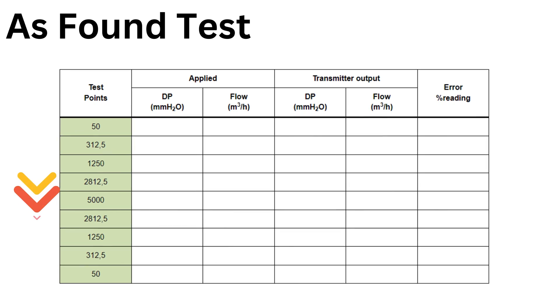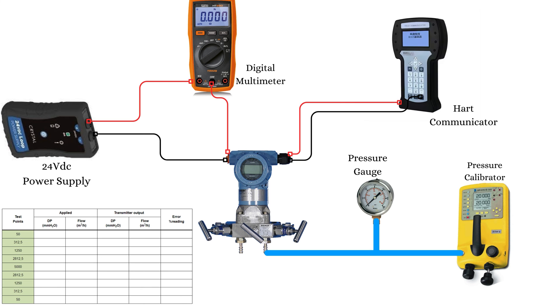Start the validation procedure with zero pressure on the pressure calibrator and increase the pressure until you reach the pressure value of the first test point. Note down the reading from the pressure calibrator in the second column, applied DP, and the reading from the transmitter in the fifth column, transmitter output flow. Similarly, apply the pressures of the other test points in the order they appear in the table. Note down the readings from the pressure calibrator and the transmitter in the appropriate columns.